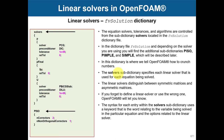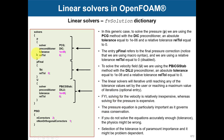In OpenFOAM there are many methods implemented, and unfortunately I cannot say there is a general method that works best for all cases — it's very problem dependent. I'll give you some guidelines. In fvSolution you have a block of solvers where you define your linear solvers by variable, and then entries related to pressure-velocity coupling, which we'll discuss in the next lecture. Here you define the variable you are solving. If you don't provide this information, the solver will complain. Then you choose the solver and the preconditioner.